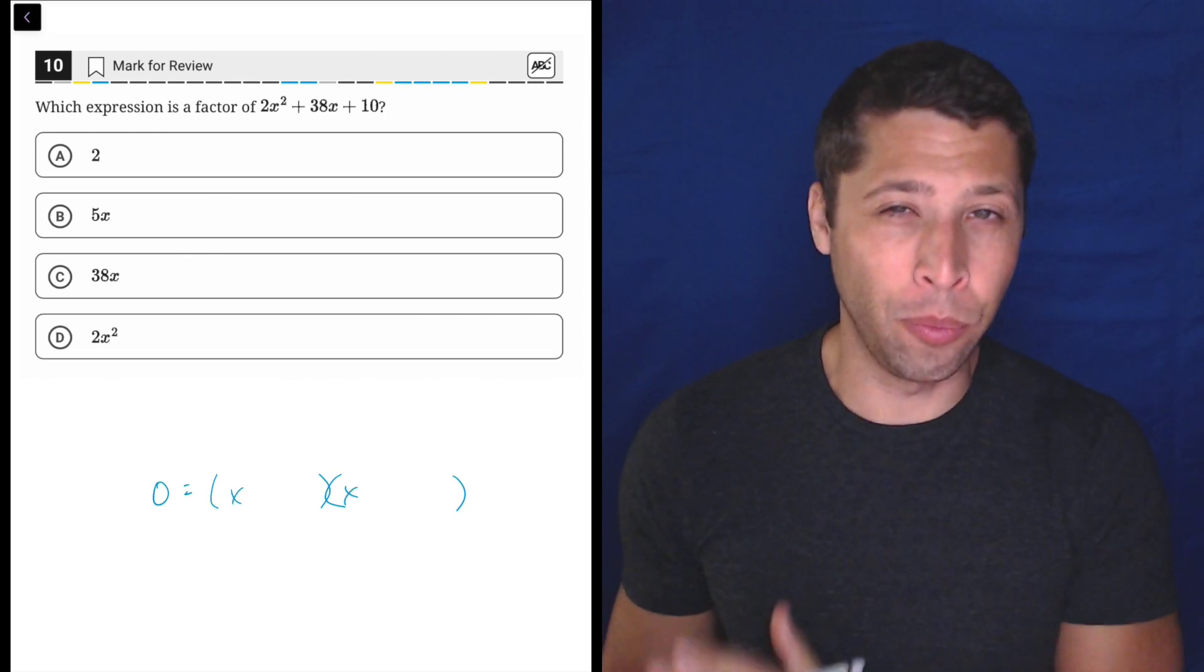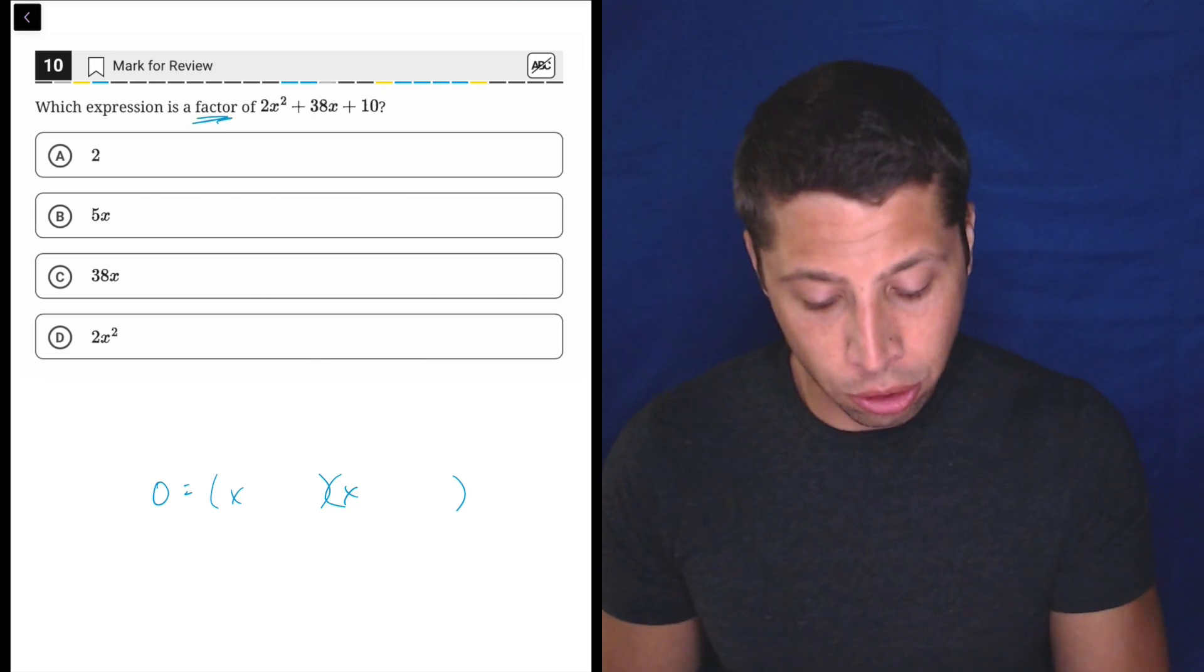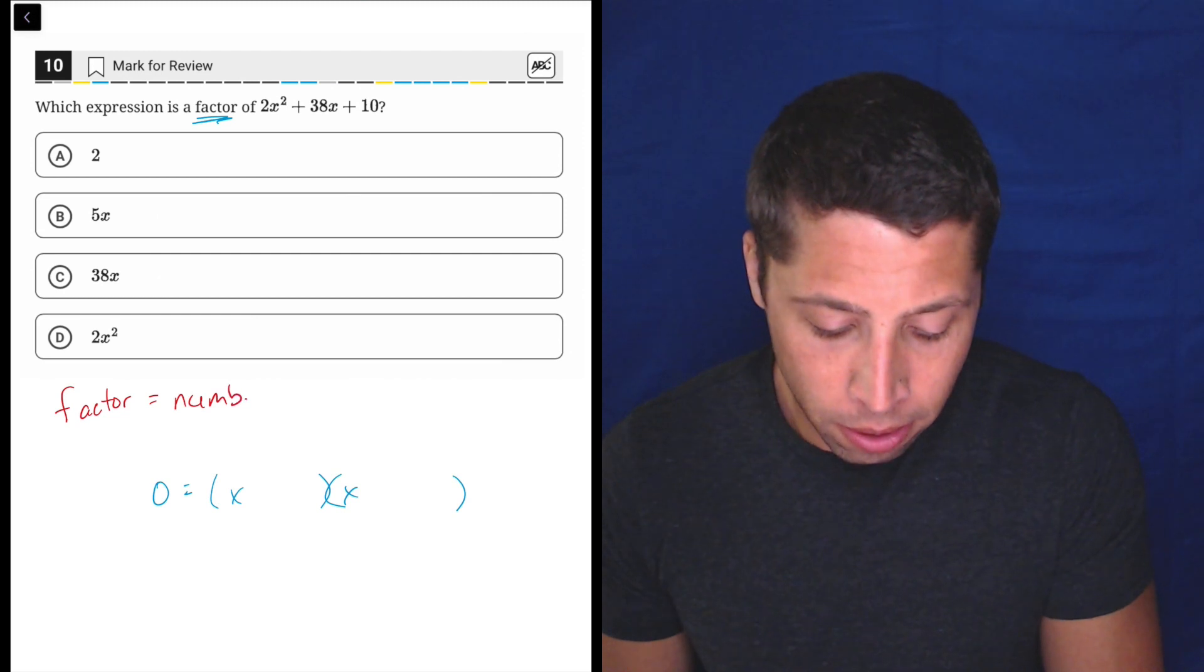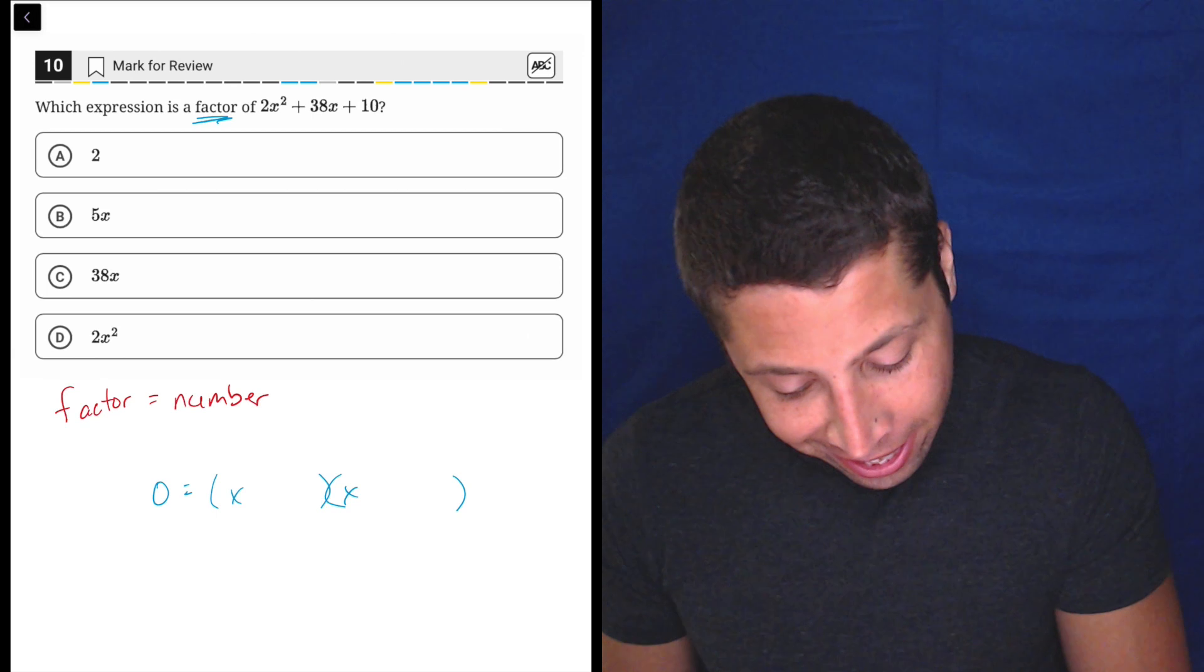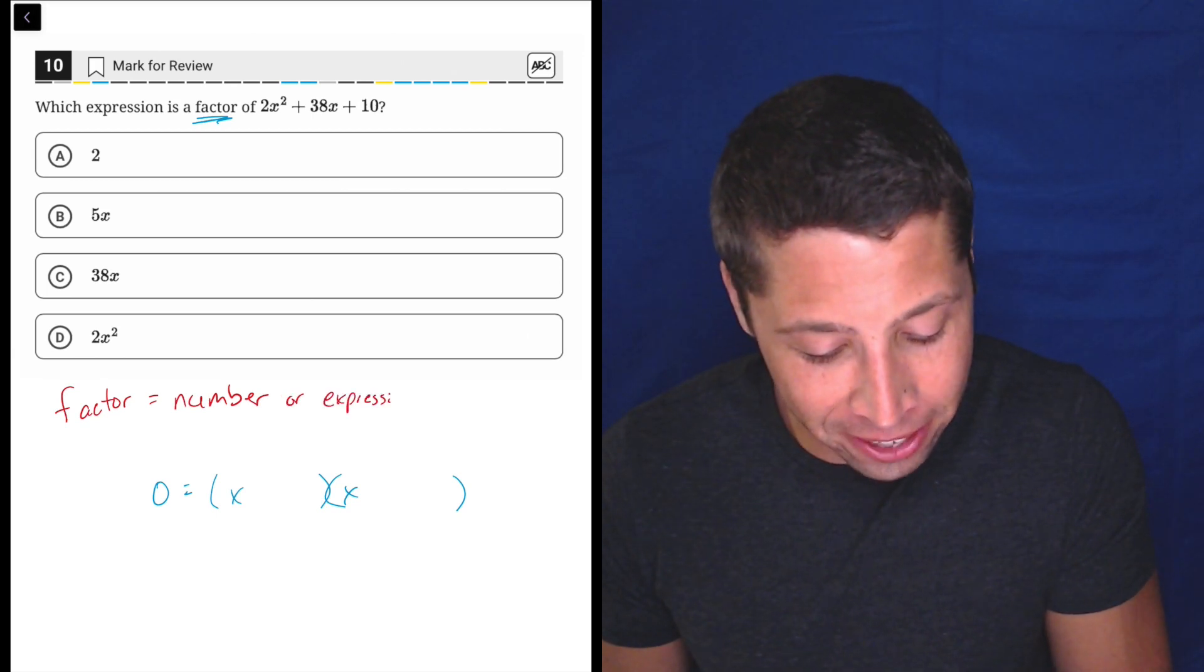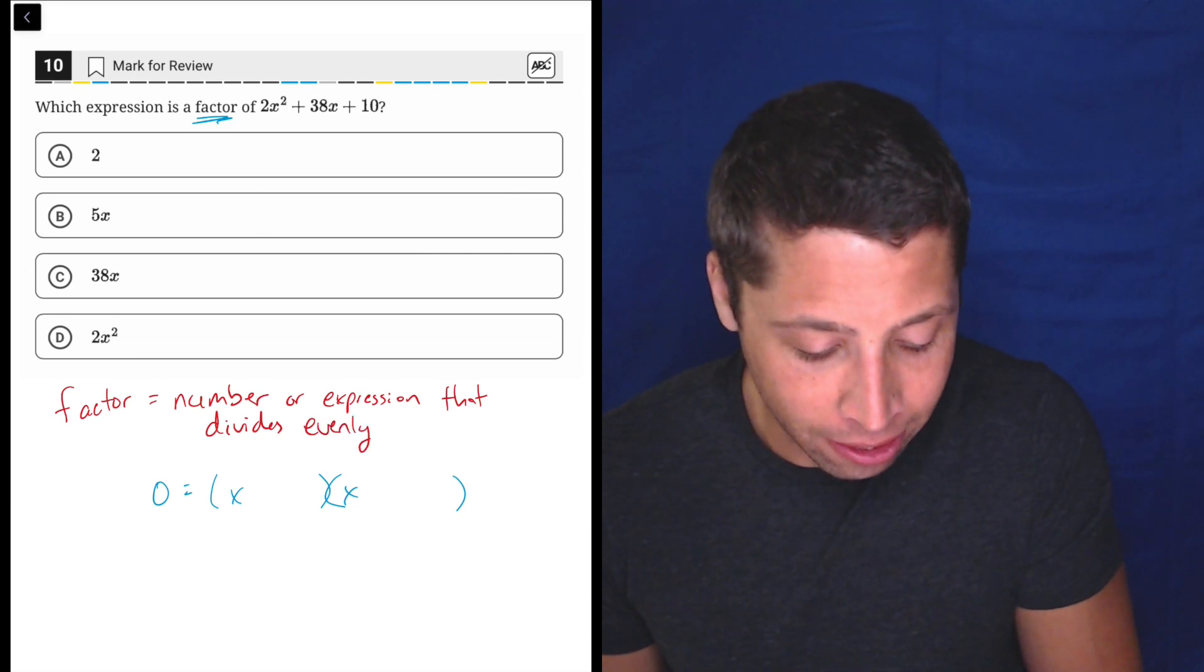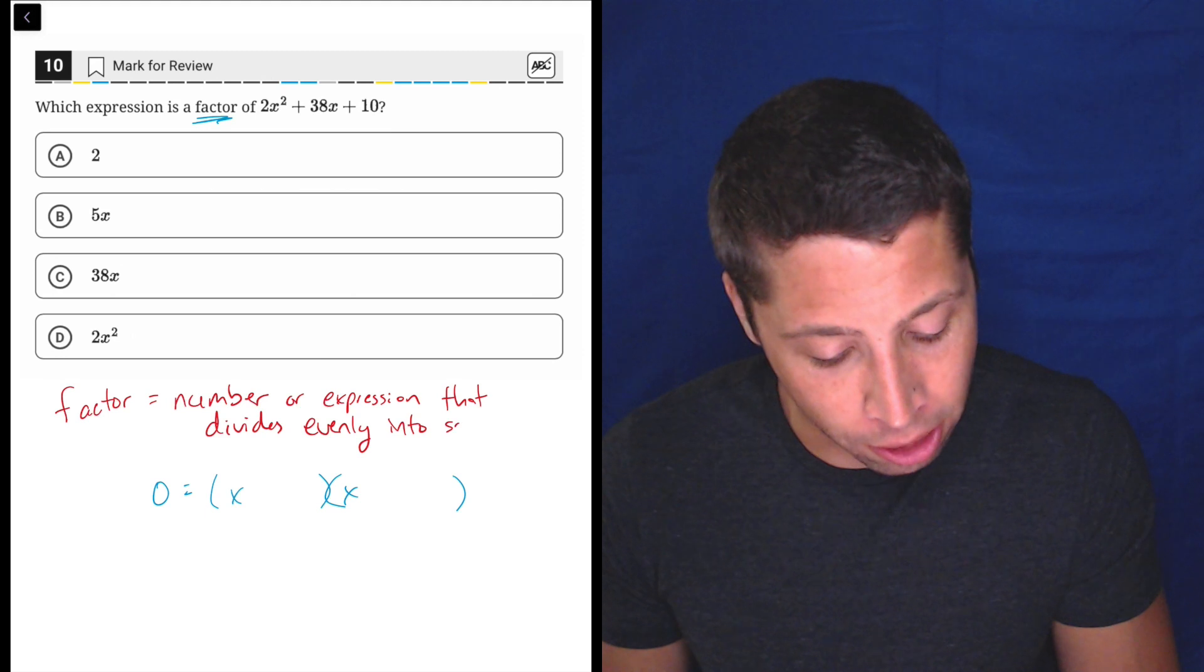That is not what we really need to do here because the word factor has a much more broad meaning. So let's define it. A factor is a number or expression—a factor can have variables—a number or expression that divides evenly into something else.